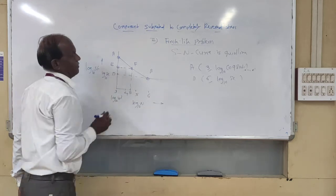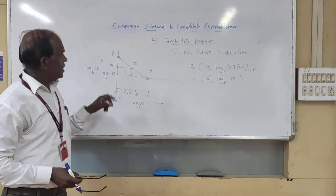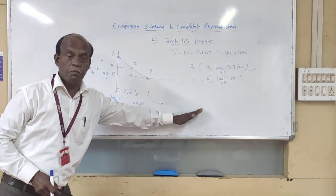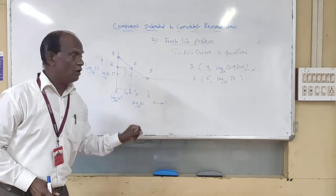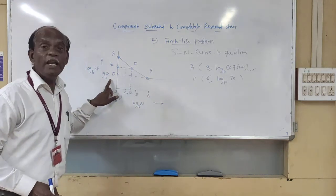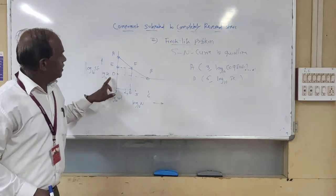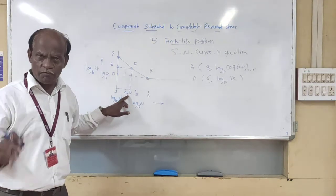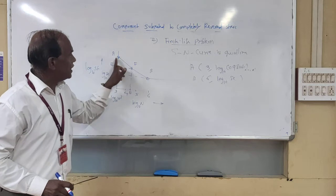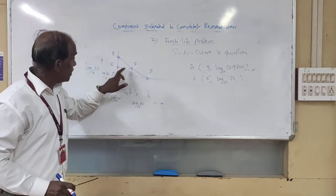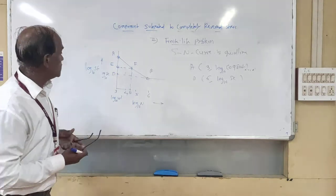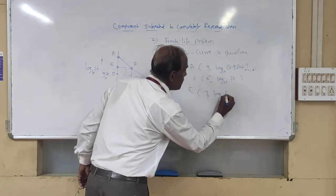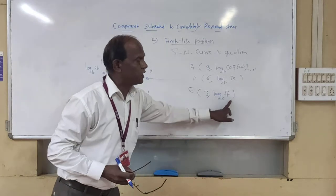From point F, draw a line parallel to the x-axis. The intercepting point on the y-axis is called point E, and the other intercept is called point D. So we get the straight line AB and beyond AB. After a certain number of stress cycles, the component is not going to fail. That point B is known as the endurance limit of the actual compound. We have to determine the life of the component for any applied stress.